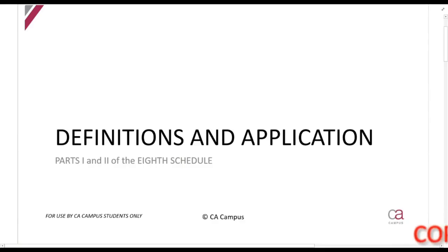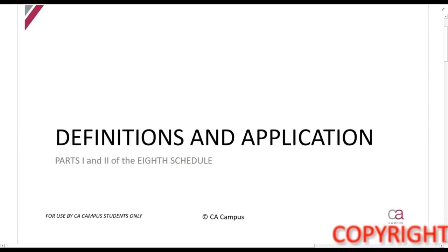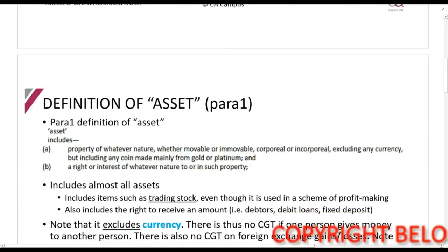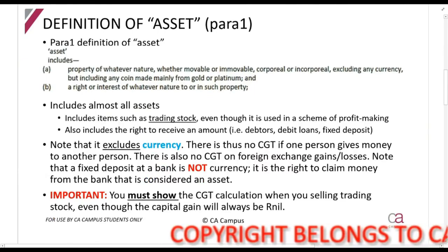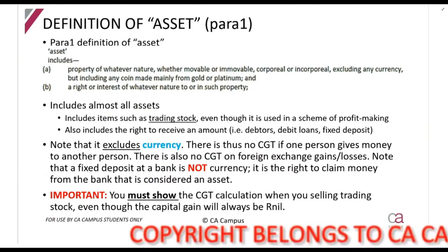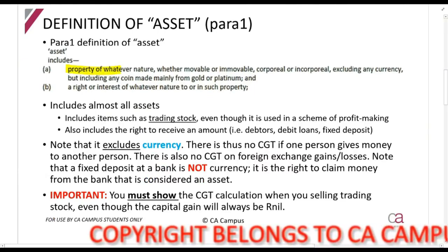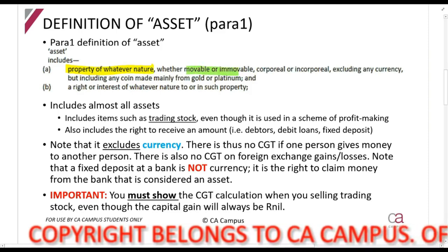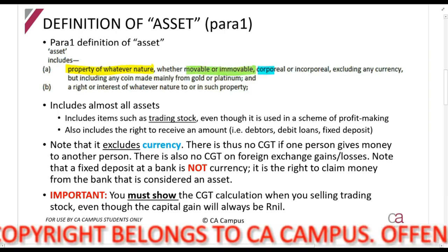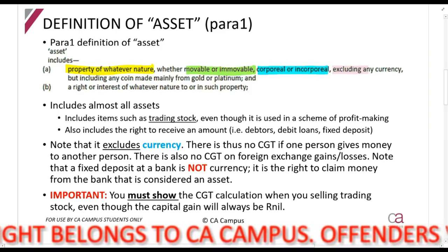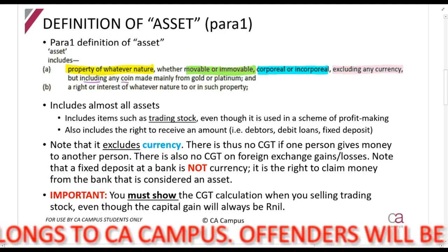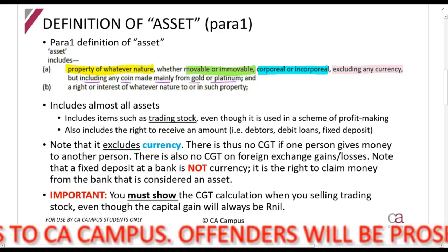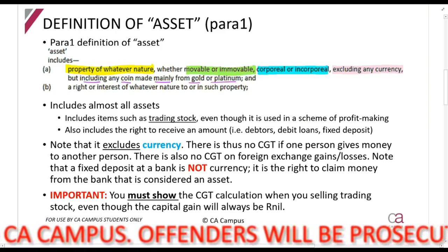We are now going to look at a couple of important definitions and, even more important, the actual application of the age schedule. The first important definition is the definition of an asset in paragraph 1. It says an asset includes property of whatever nature, whether movable or immovable, corporeal or incorporeal, excluding any currency, but including any coin made mainly from gold or platinum.